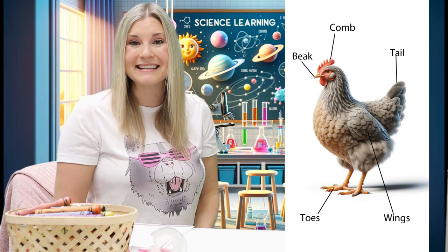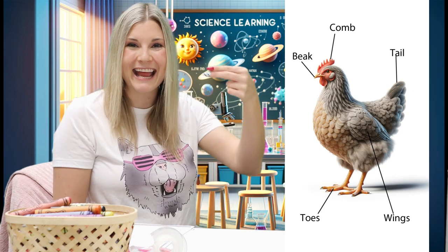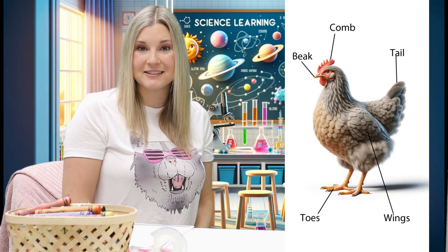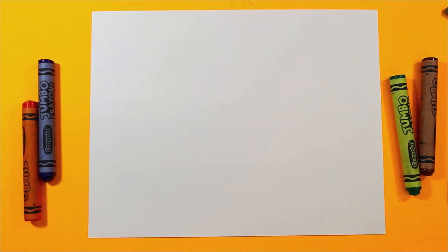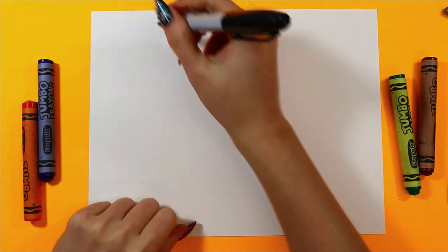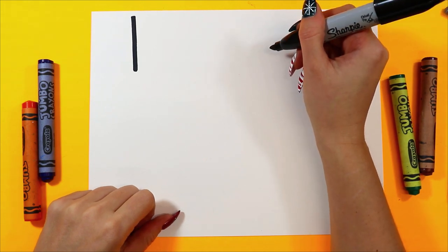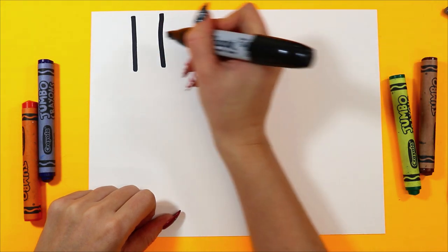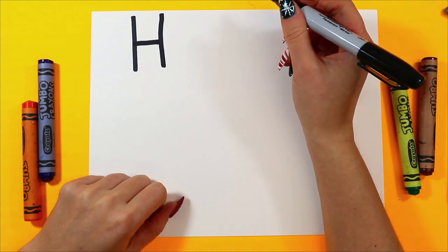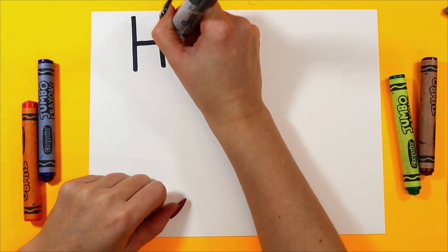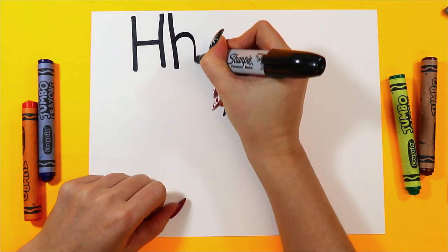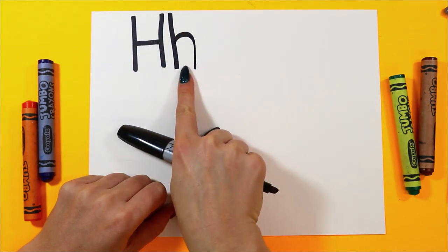Now that we've learned about a hen, let's go draw a different H-word, and that is hippo. Hippo starts with the letter H. So let's head on over to the art studio. Let's draw a letter H-word — we're going to be drawing a hippo. Let's write the word hippo. Let's begin by writing our letter H. We're going to draw one line down, and another, then connect it in the middle for our uppercase letter H. And for our lowercase letter H, we draw one line down, curve up, and over. So we have an uppercase letter H and a lowercase letter H.